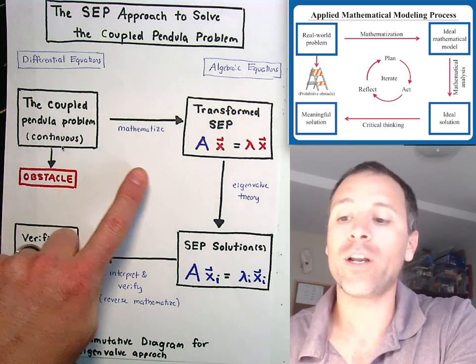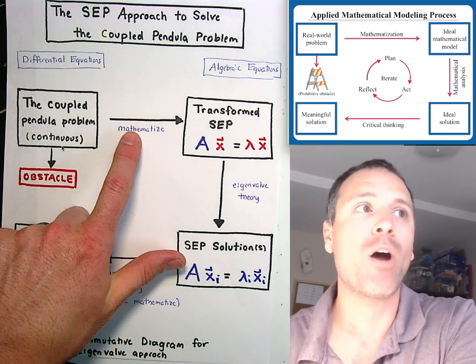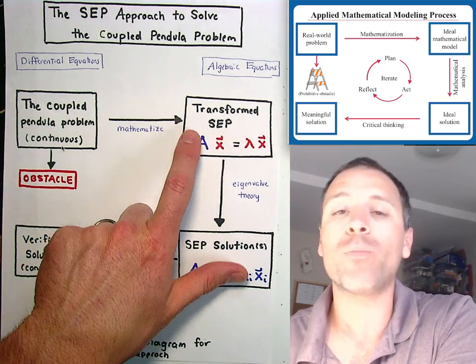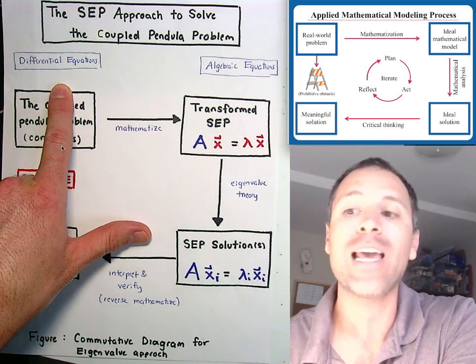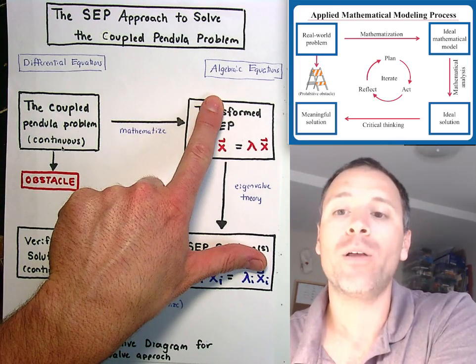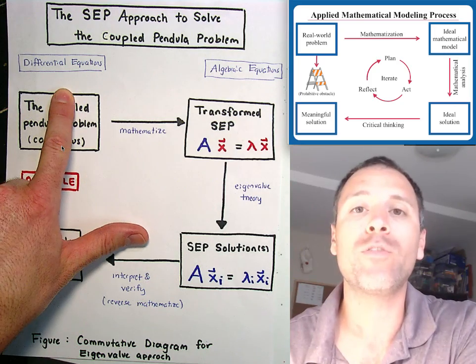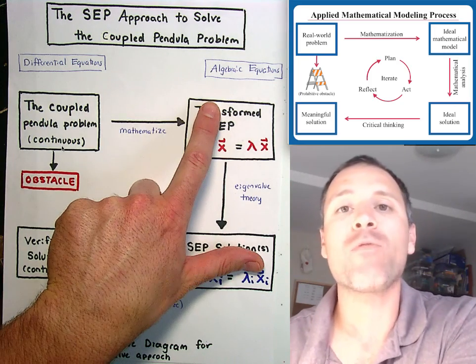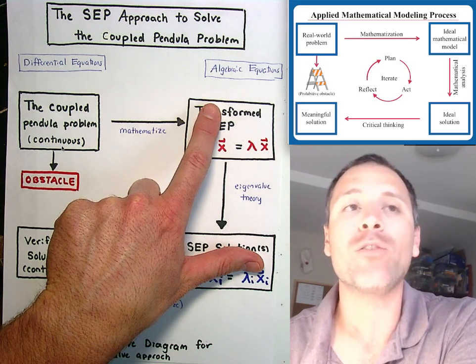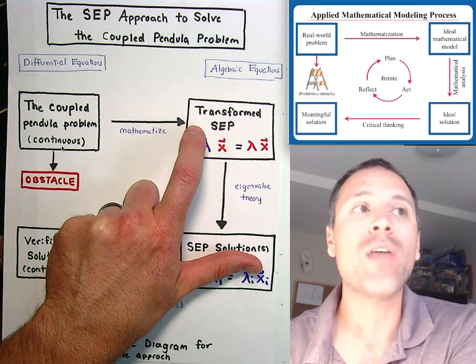One of the things that we're going to see is we're going to mathematize that problem. We're going to turn it into an algebraic problem. So that means turn a problem from calculus into a problem in algebra. Turn a problem that involves continuous function into a problem that relies only on scalar-valued variables.